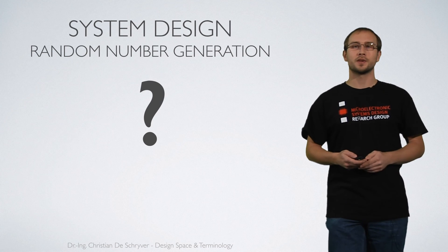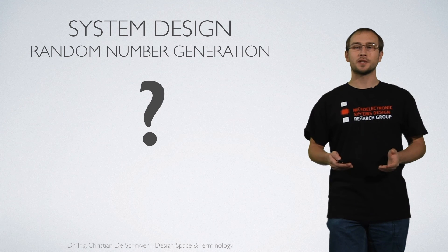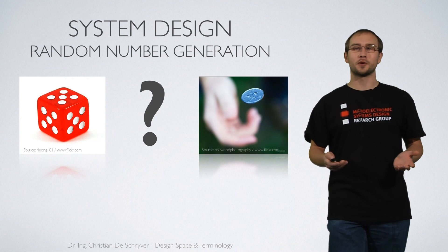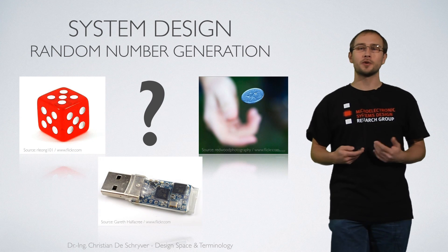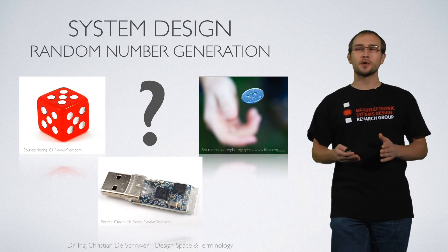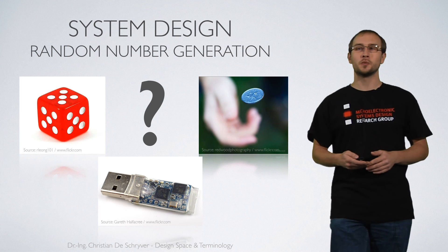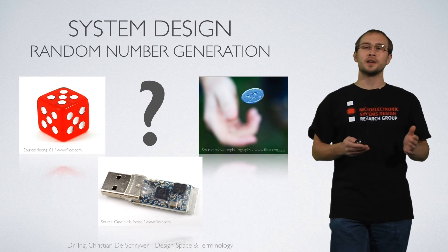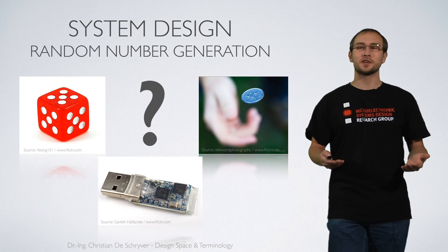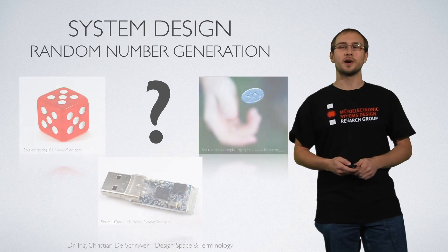Let's consider one example. A system that generates random numbers. There are many ways for generating random numbers. For example you could just throw a dice, you could flip a coin or you could use an elaborate electronic system that does the job for you. So at the very first step in the design process it's not really clear which decision to take. It can be either a mechanical or electrical system and that of course has a huge impact on the later process where the design is refined.